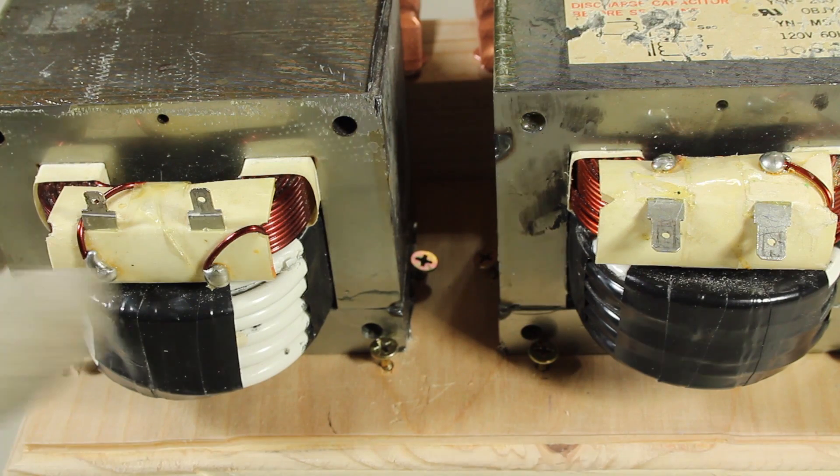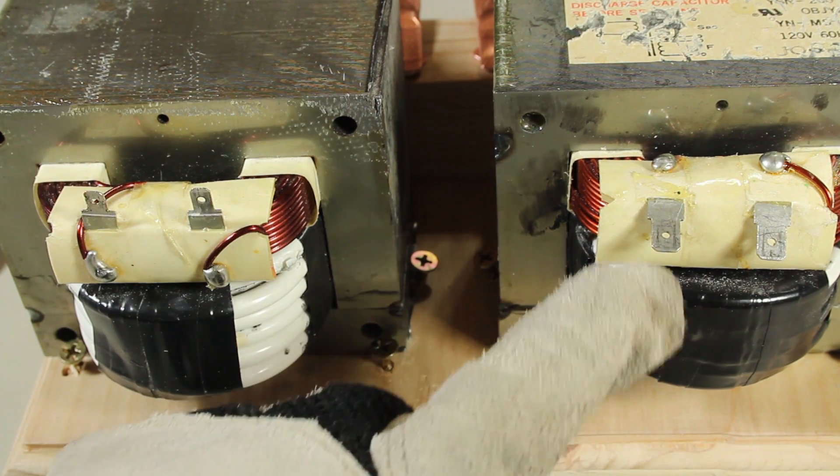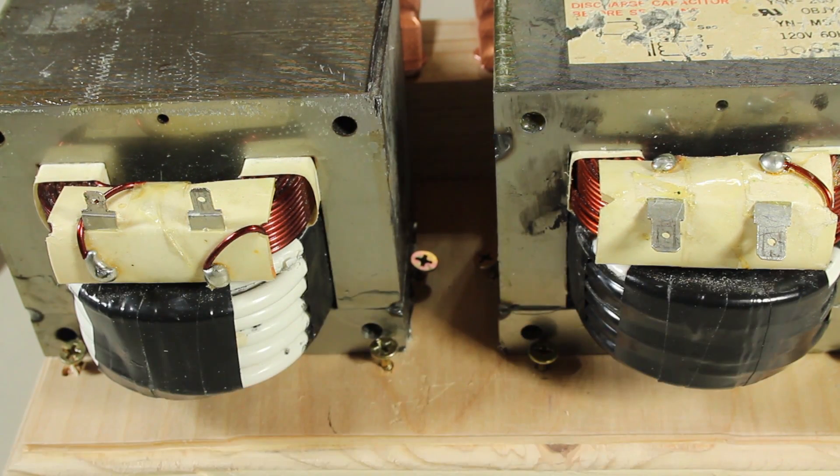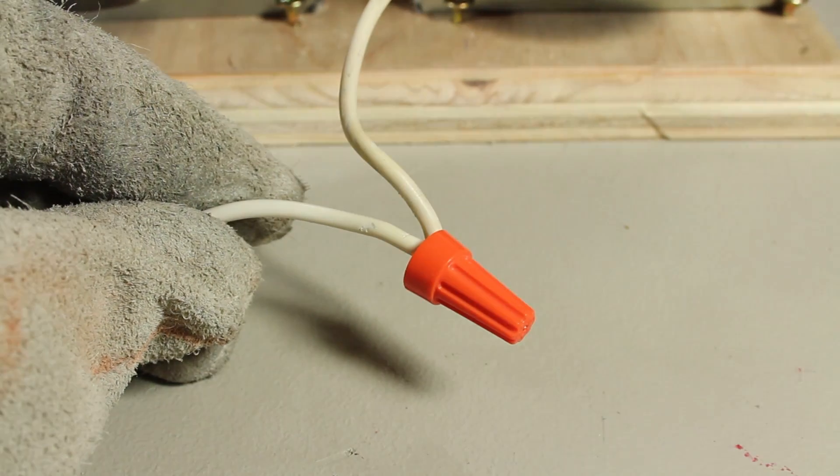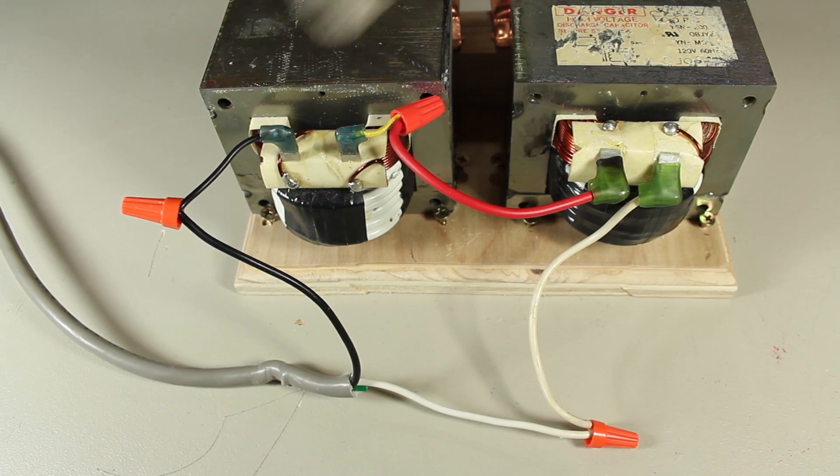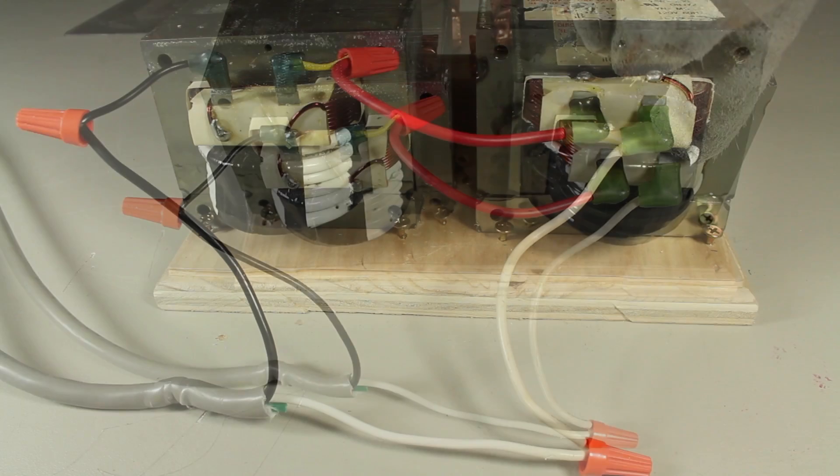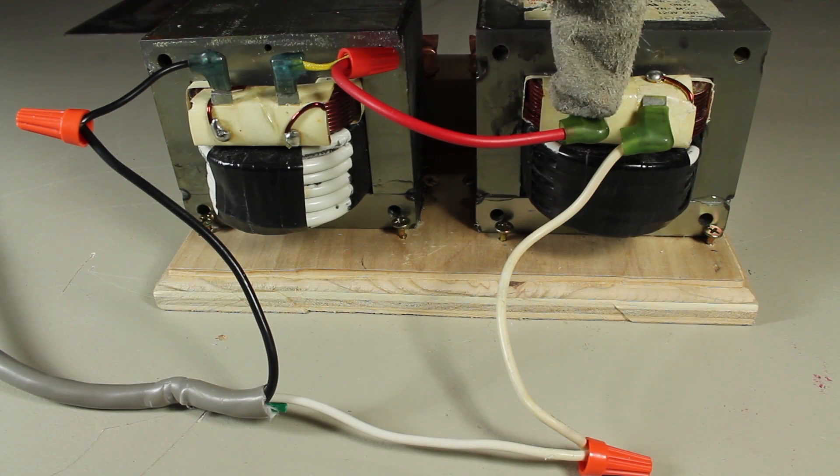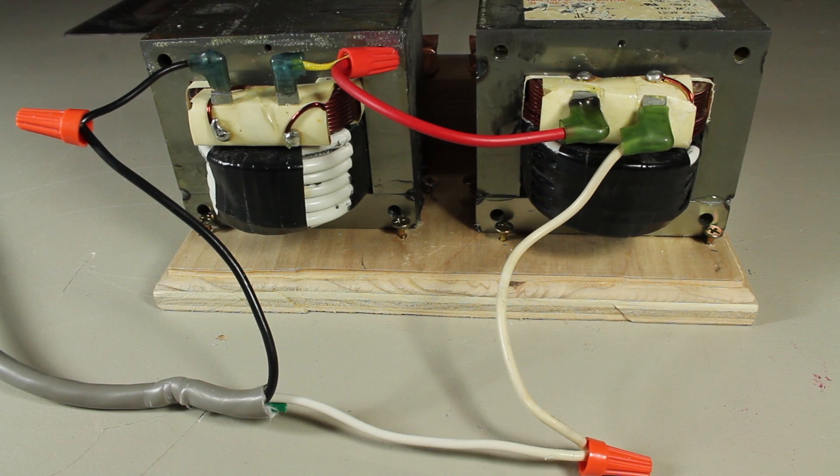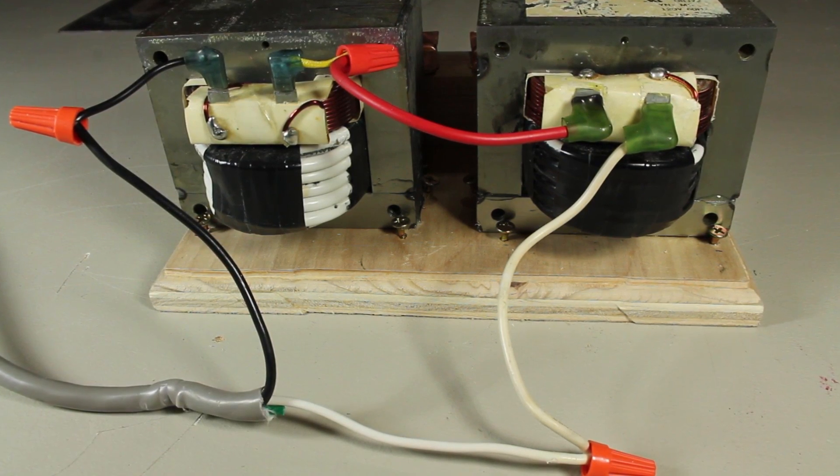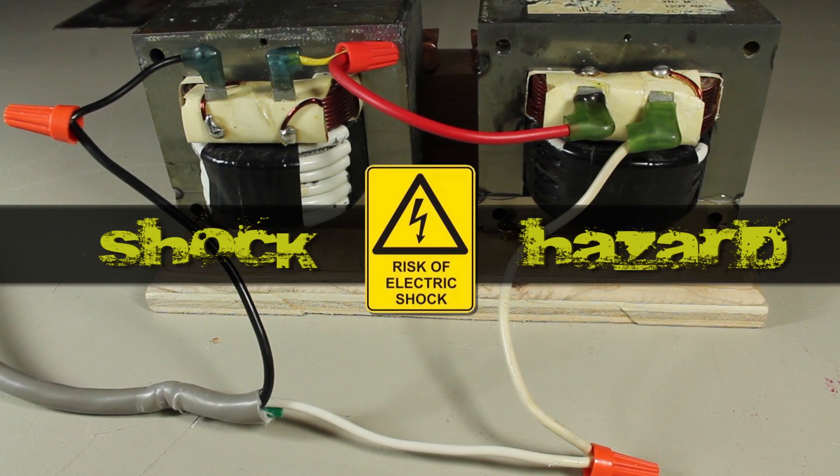Looking at the back of the transformers, you can see four terminals that connect to the primary coils. I used some salvage cables and wire nuts to connect a hot lead to one transformer, and a hot lead to the other. Another wire was used to bridge the two, connecting them in series. By the way, the color of these wires doesn't mean anything. They're all going to be shock hazards.